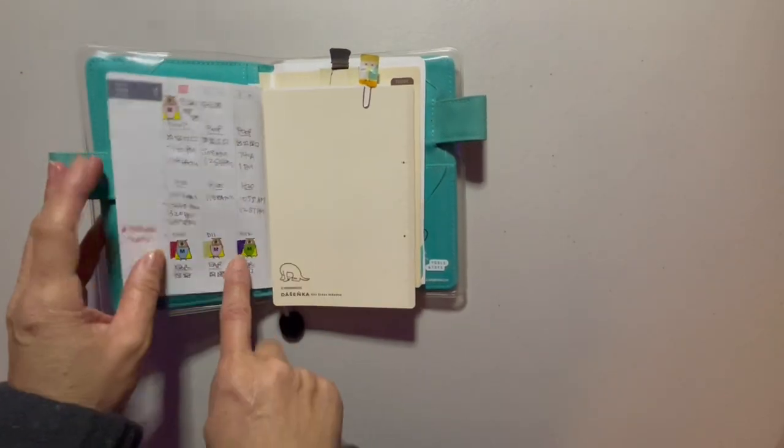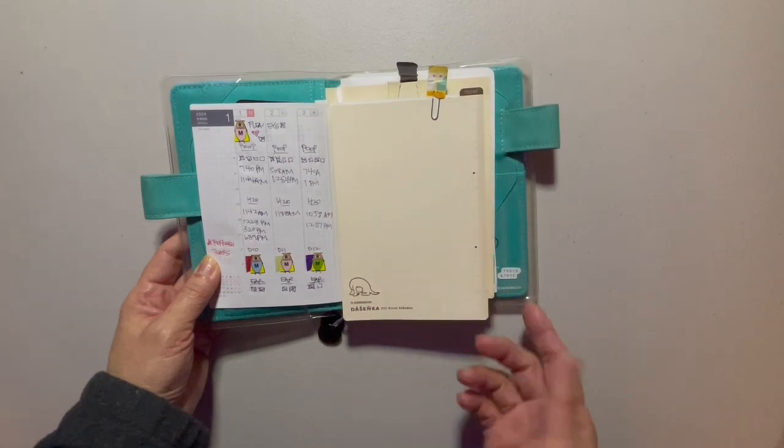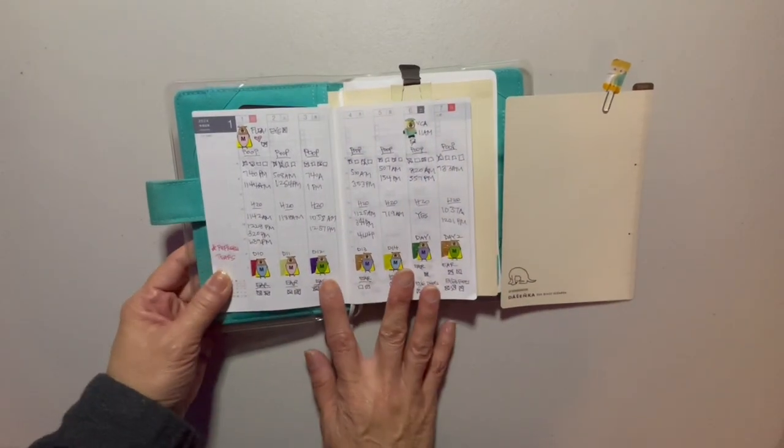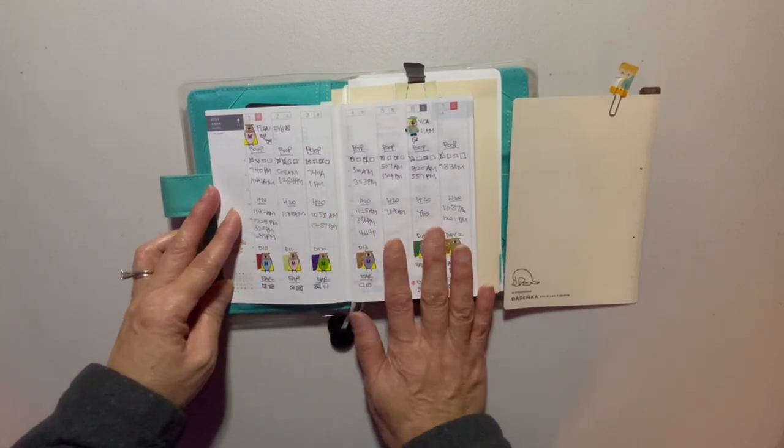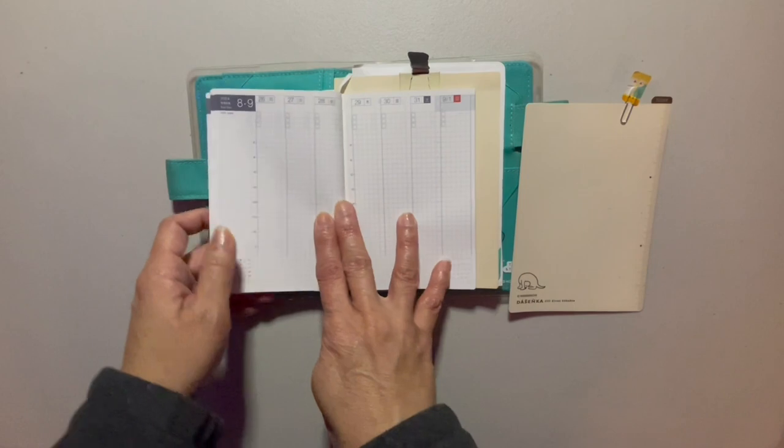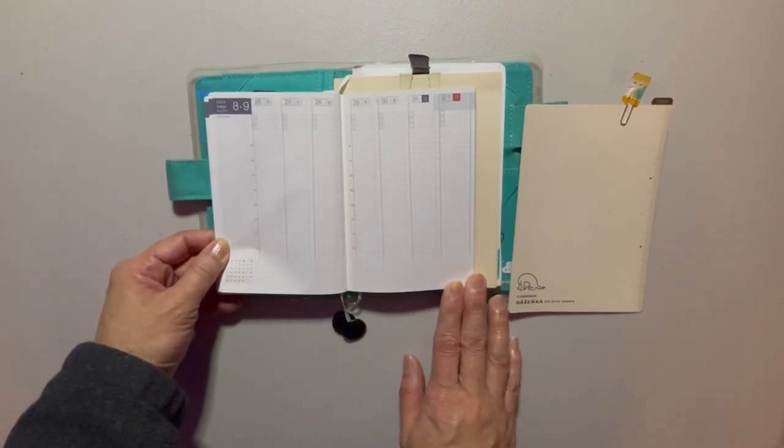And I've been using the weekly supplement. The A6 Hobonichi with the daily pages is just too much. This is just perfect for me. So this is the first week of January. This is the weekly look. This is what a blank week looks like.